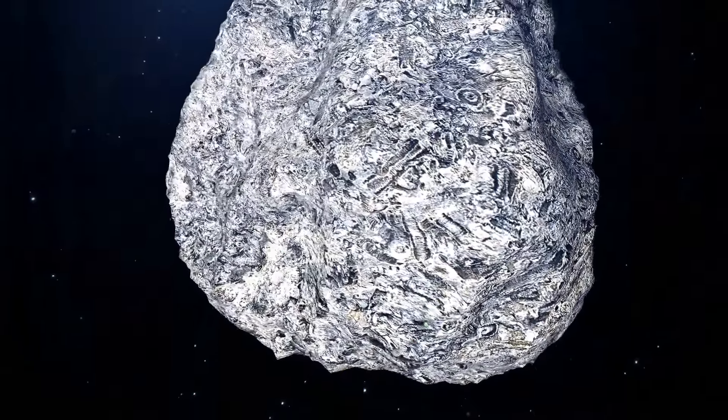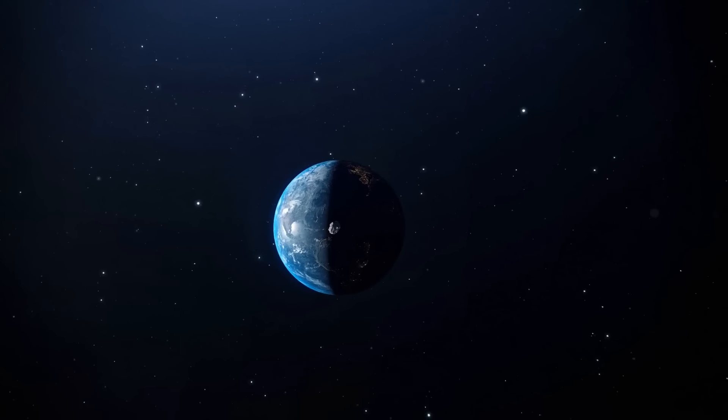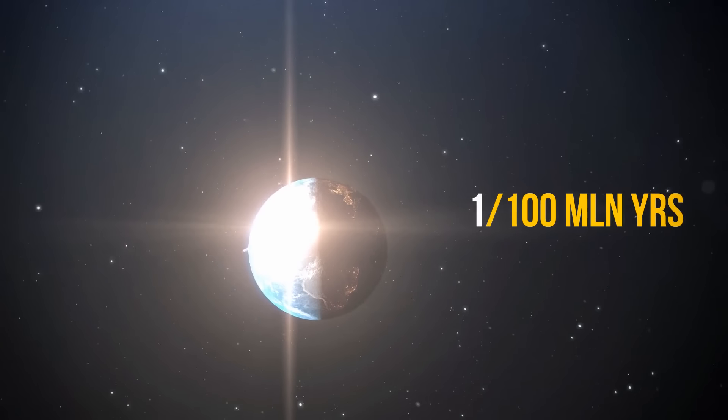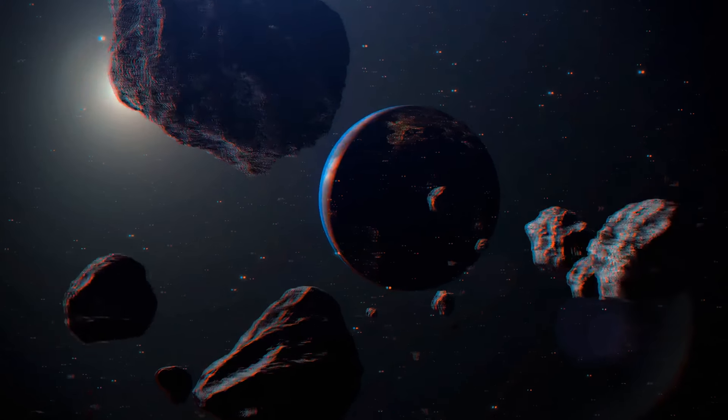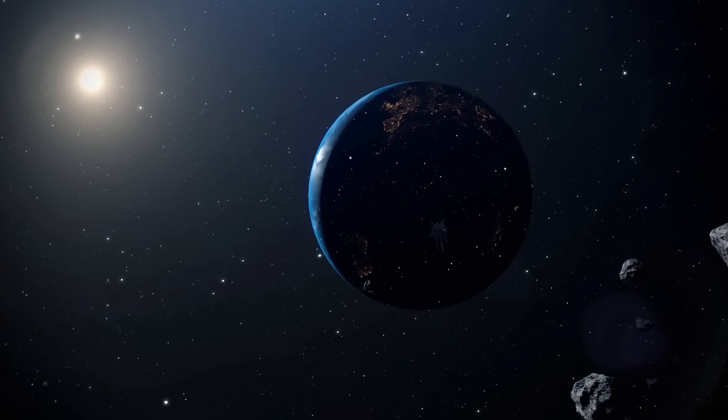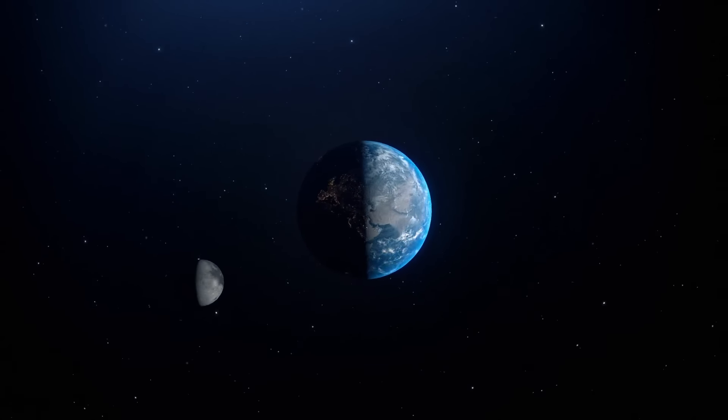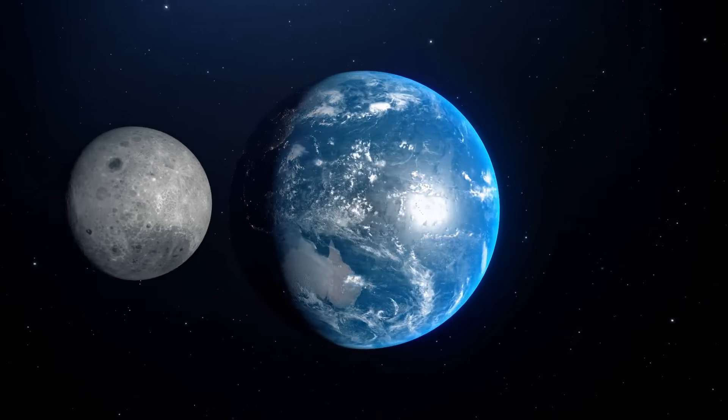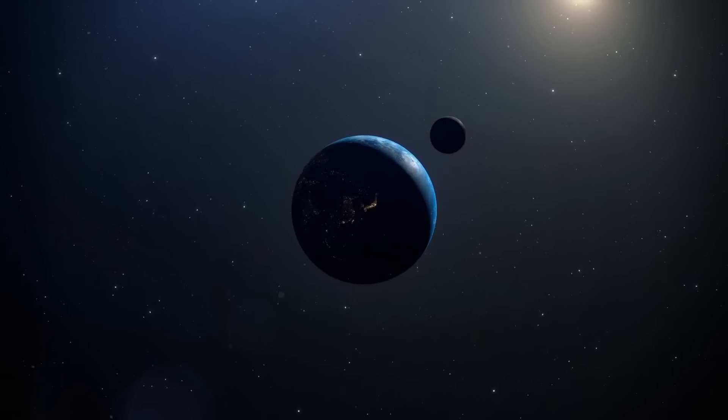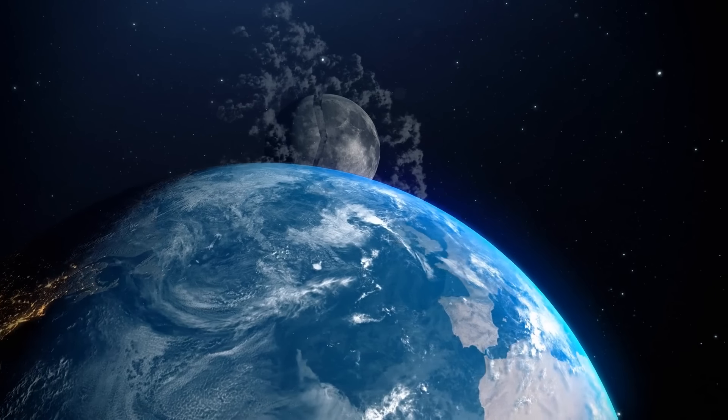Do you remember me mentioning the Chicxulub meteorite? Similar tragedies happen to our planet once every 100 million years or so. But if it became the size of Jupiter, these guys would visit us every Friday. Also, we'd have to say bye-bye to the Moon. Our natural satellite is too close to us. So if Earth grew in size, it would be a real catastrophe.